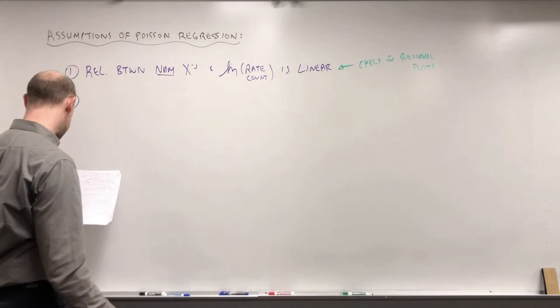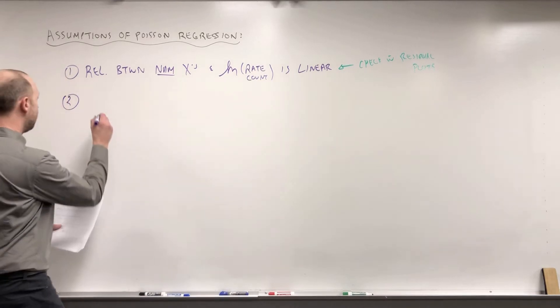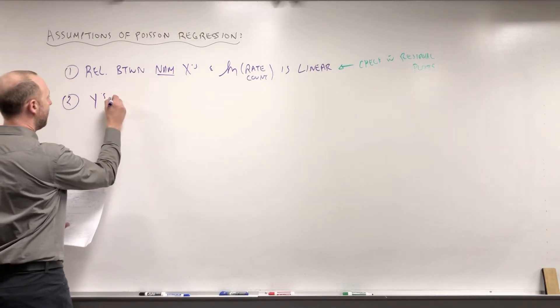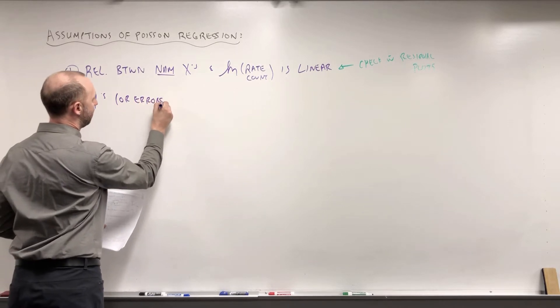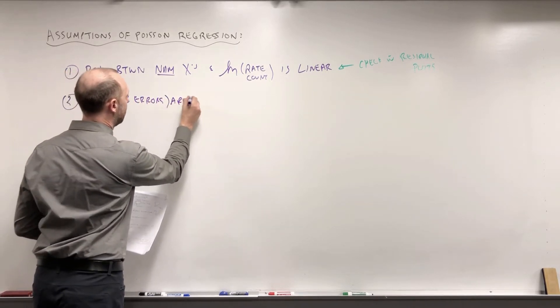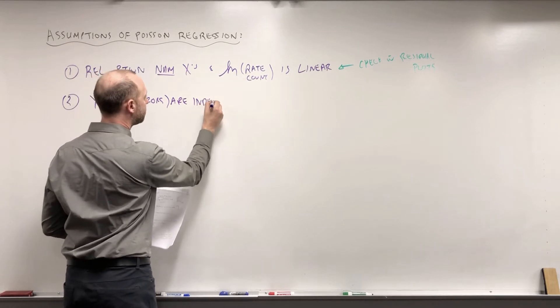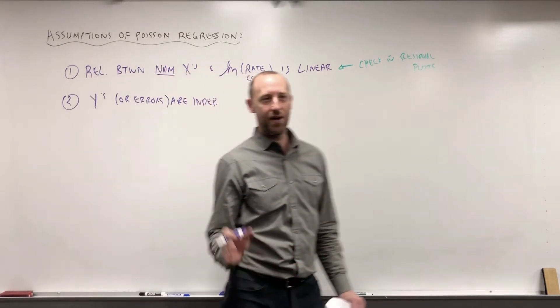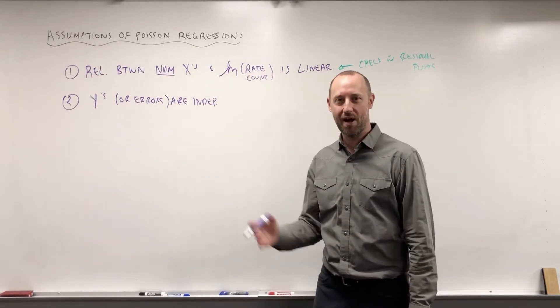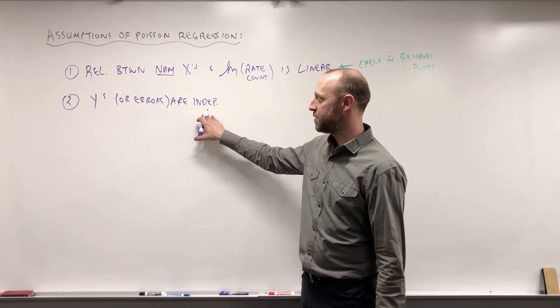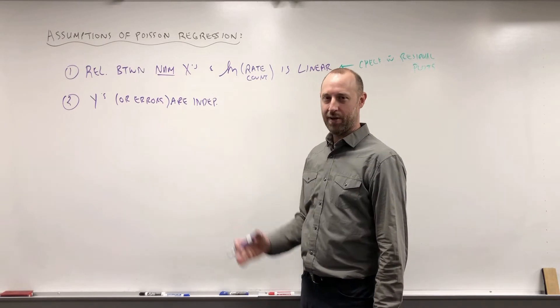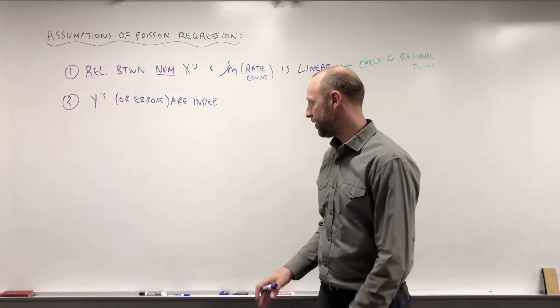The second assumption is the independence, that the y values or the errors are independent. So the y value for person one is not related to the y value for person two, person three, and so on. So this again is the assumption that's in all of these regression models, that the outcomes that we've observed are independent of one another.